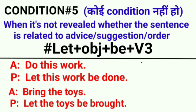See condition number five: when it's not revealed whether the sentence is related to advice, suggestion, or order. कभी-कभी आपको पता नहीं होता — suggestion की बात है, advice की है, या order की है। तो उसमें हम general rule follow करते हैं — 'let' लगाकर passive बनाते हैं। Structure: 'let' + object + 'be' + verb का third form। Example: 'do this work' — passive: 'let this work be done'. Next: 'bring the toys' — passive: 'let the toys be brought'. 'Let this work be done' का मतलब: यह काम किया जाए। जब category clear न हो, तो 'let' लगाकर passive बनाते हैं।